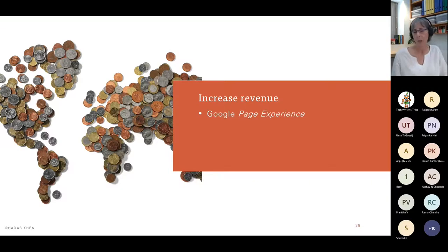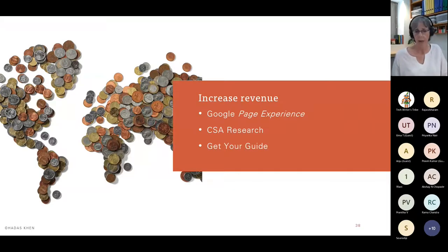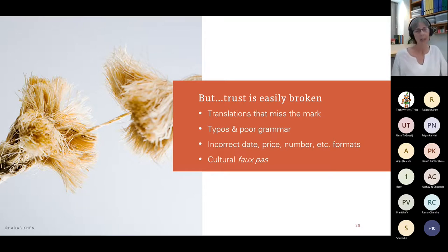We want to increase revenue. The Google page experience measures how long users spend time on a web page — they'll spend more time if it's well-written and localized, meaning Google will rank you higher. CSA Research found that 74% of users are more likely to make another purchase if post-sales support is available in their language. One example: Get Your Guide, a travel site, localized their Japanese website including currency references, and within a year saw a 400% increase in revenue. But trust is easily broken — I once got to a checkout page and saw currency written both with and without decimal points, and found a typo. Needless to say, I backed out and didn't proceed with my purchase.